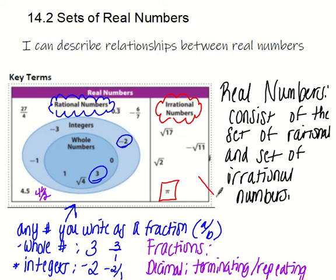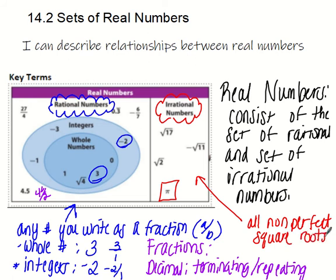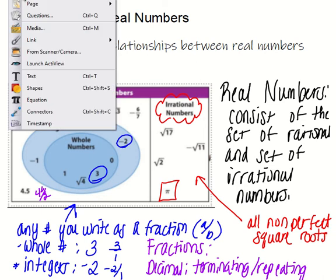And then the second subset, if you will, is all non-perfect square roots. And I actually am going to show you guys a little bit. I hope it doesn't take too much time. But basically, that looks like, so watch what I'm going to do here. I'm just going to do this real quick. Insert page after.